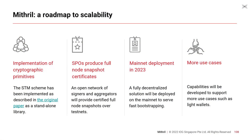What's the roadmap to scalability with Mithril? The first step is to implement the cryptographic primitives. We have developed a standalone library that implements the STM scheme exactly as described in the original research paper. This library is completely agnostic of the blockchain, which means it can run on any proof-of-stake environment, and it is available on our GitHub repository. The second step is to have SPOs produce full node snapshot certificates — for this we have developed an open network of signers and aggregators that provide certification for the snapshots, currently running on the testnet.